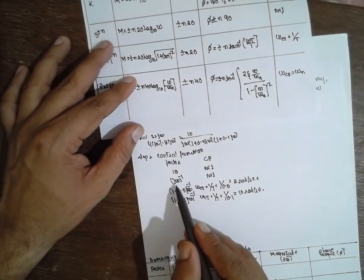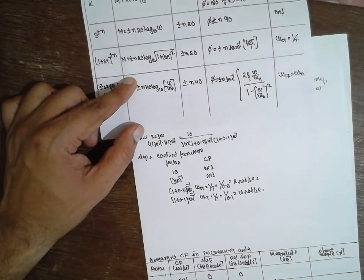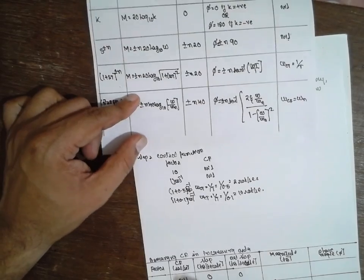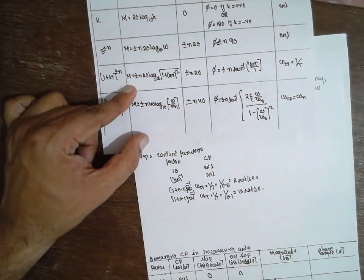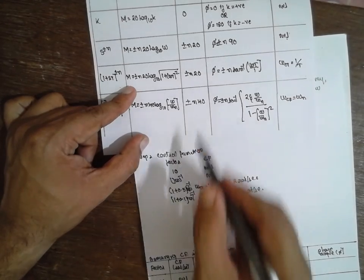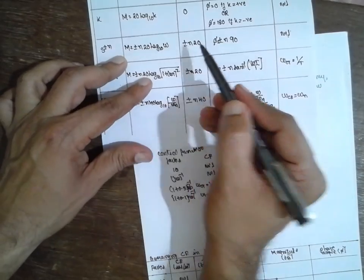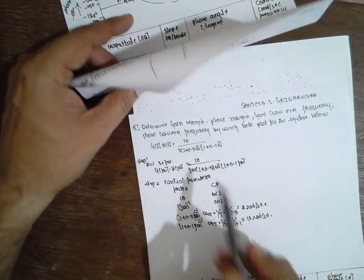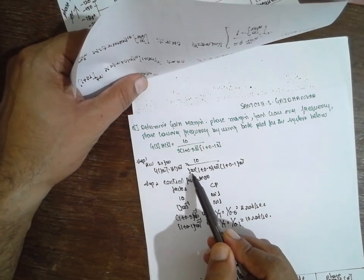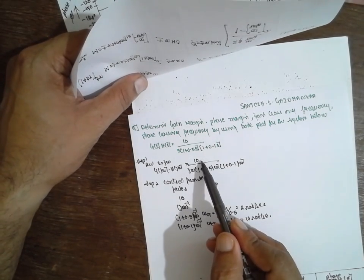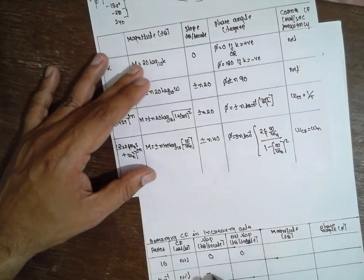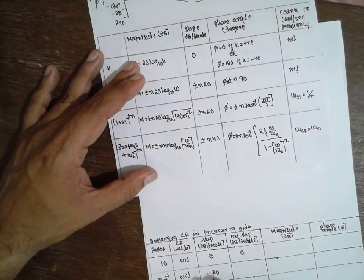Next, for jω raised to minus 1, the corner frequency is nil. The slope for this factor is minus 20 dB/decade — it is minus 20 because it is located below jω in the denominator. The net slope becomes 0 minus 20 = minus 20.